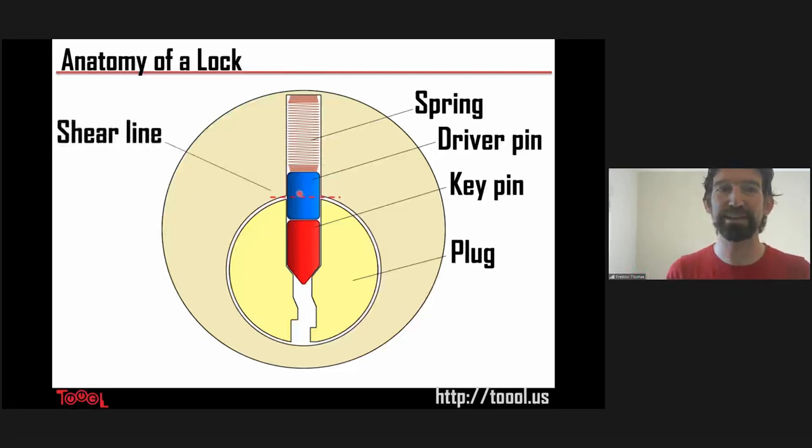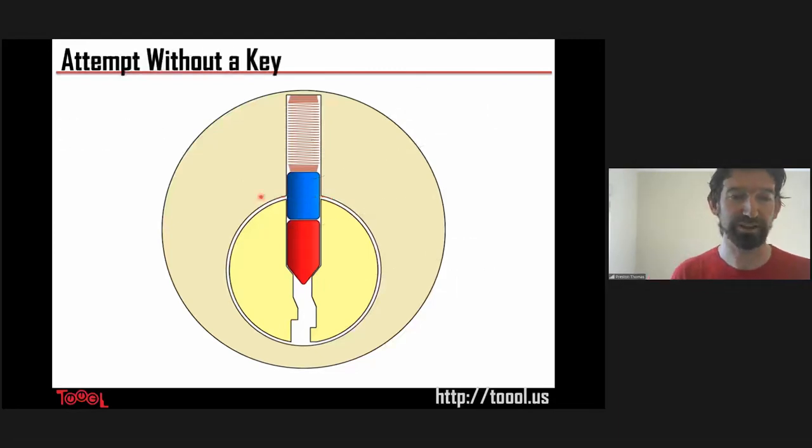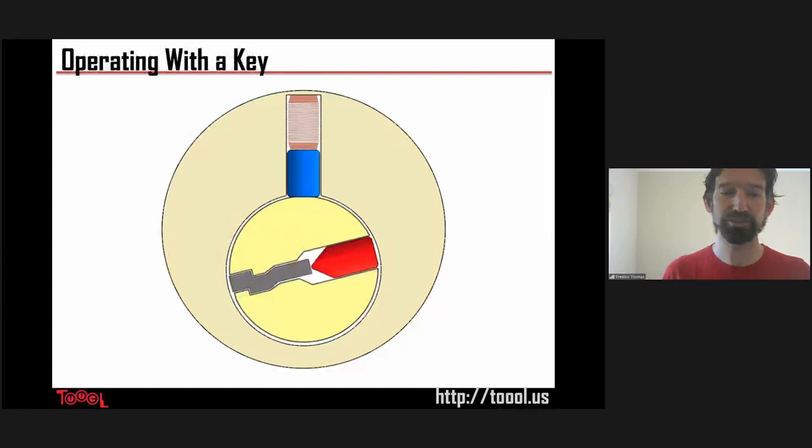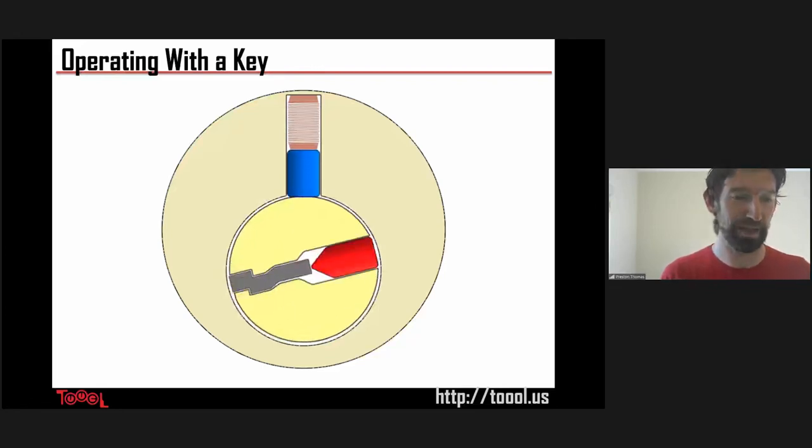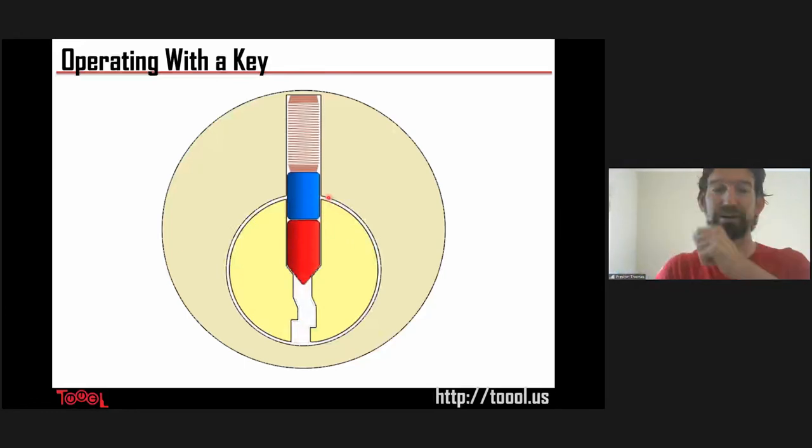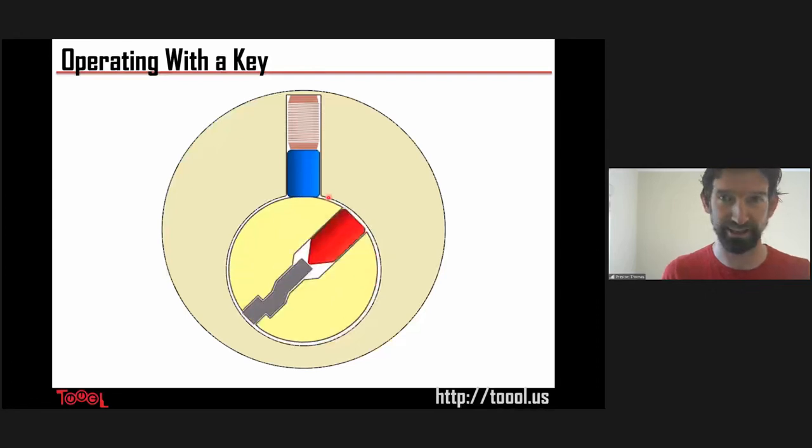We talked about the driver pin being in the way. What we mean is it's at this dotted line called the shear line. The shear line isn't a part of a lock. It's a place, or really an absence of thing, which is the separation between the plug that turns and the housing that doesn't. As long as there's something at that shear line, usually the driver pin, the lock is locked, won't turn, and won't open. Here's what it looks like when you try to turn the lock with the driver pin still in place. It wobbles a little bit, but it doesn't open. The way to change that is with a key. All the key's job is to displace, fill up that space so that the key pin rises up, which pushes the driver pin up, and as soon as the driver pin is past that shear line and there is nothing at the shear line, there's nothing blocking the plug. The plug can turn and the lock can open.